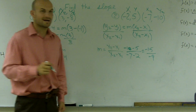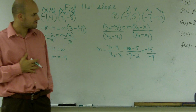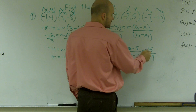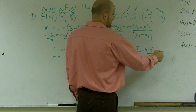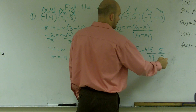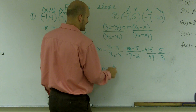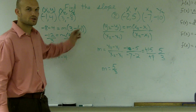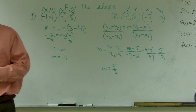Now, this answer I can't divide evenly, but I can reduce it. It looks like 3 goes into both numbers. The negative signs cancel out, and 3 goes into both — giving 5 thirds. So therefore, m equals positive 5 thirds. And that is how you find the slope using the slope formula and the point-slope form equation.